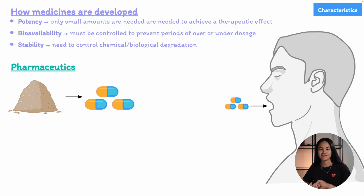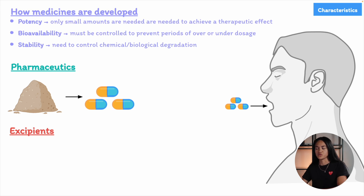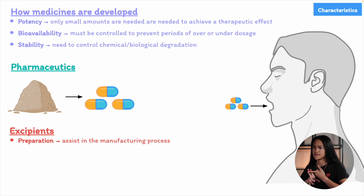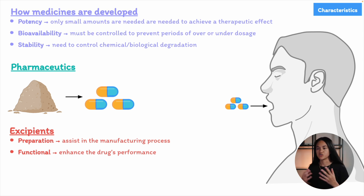Medicines contain more than just the active ingredient — they also include excipients. An excipient is a pharmacologically inactive substance that serves as a vehicle or medium for the active ingredient. Excipients can be categorized into three main groups: preparation excipients assist in manufacturing (e.g., glidants improve powder flow during tablet compression); functional excipients enhance the drug's performance (e.g., enteric coating protects acid-sensitive drugs from stomach acidity); and patient acceptability excipients.